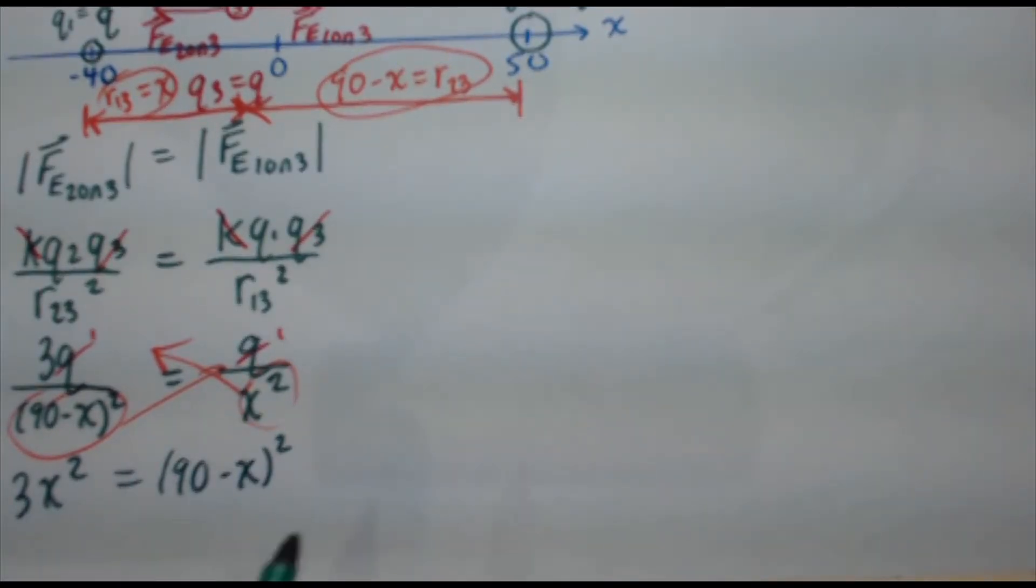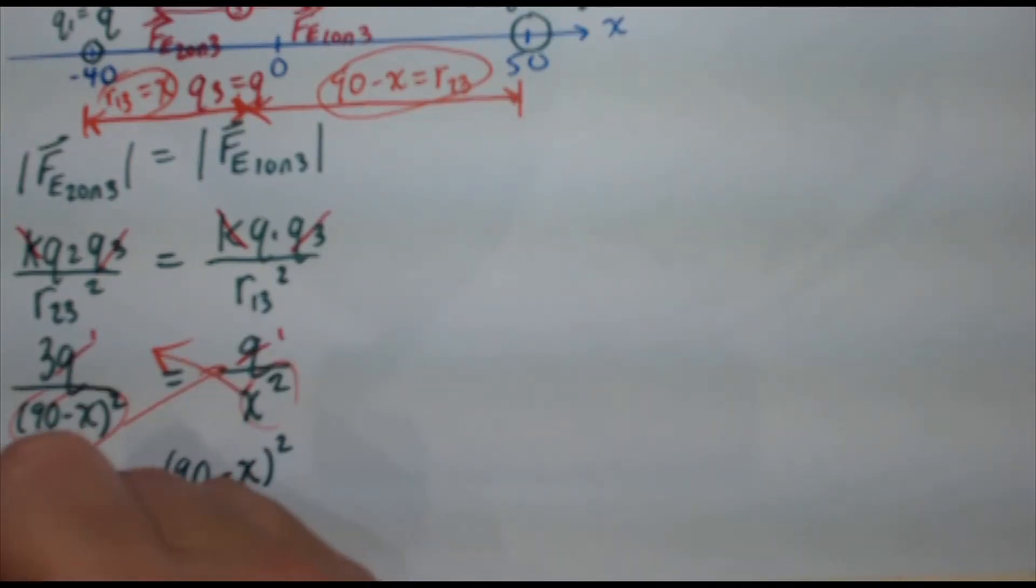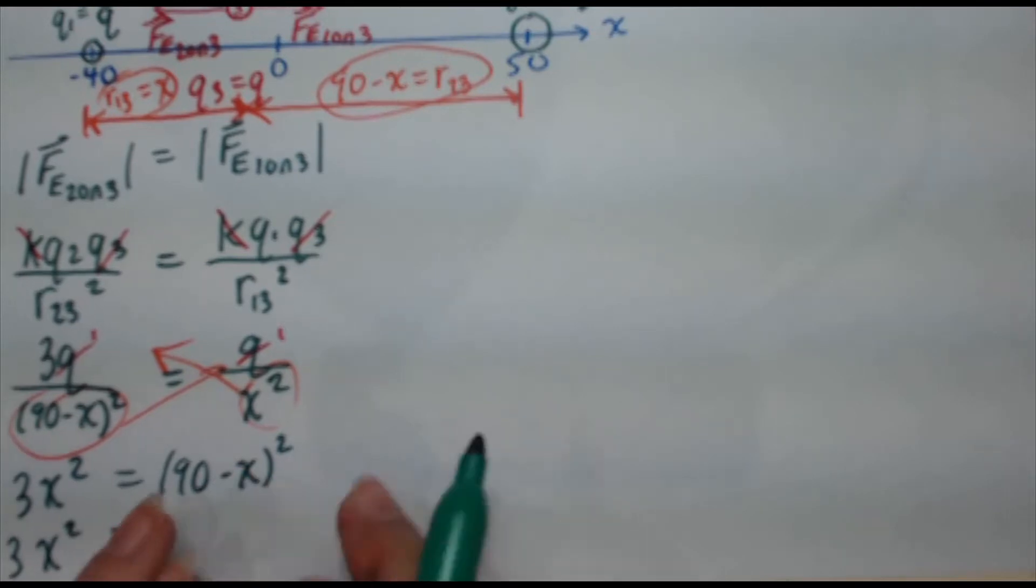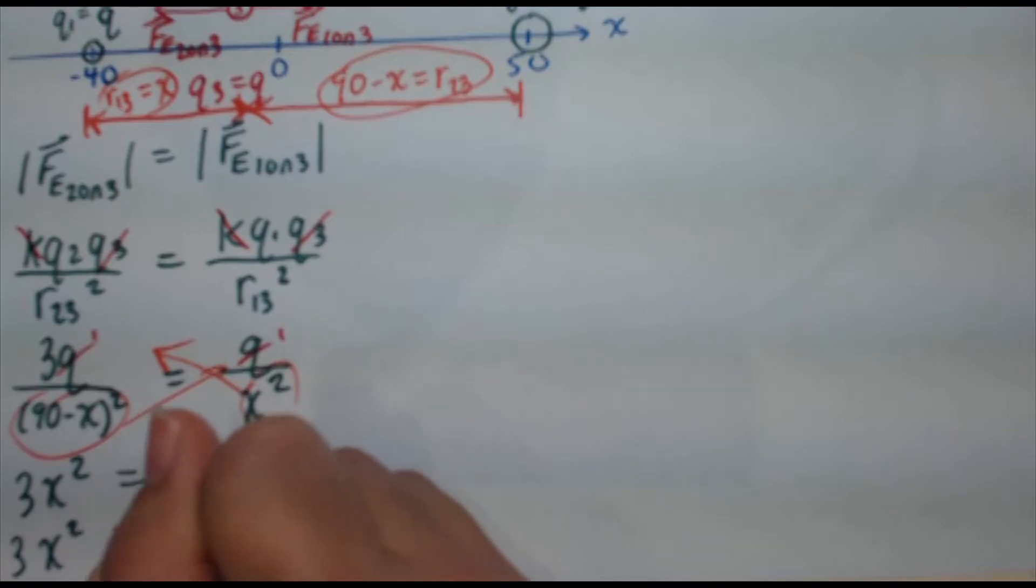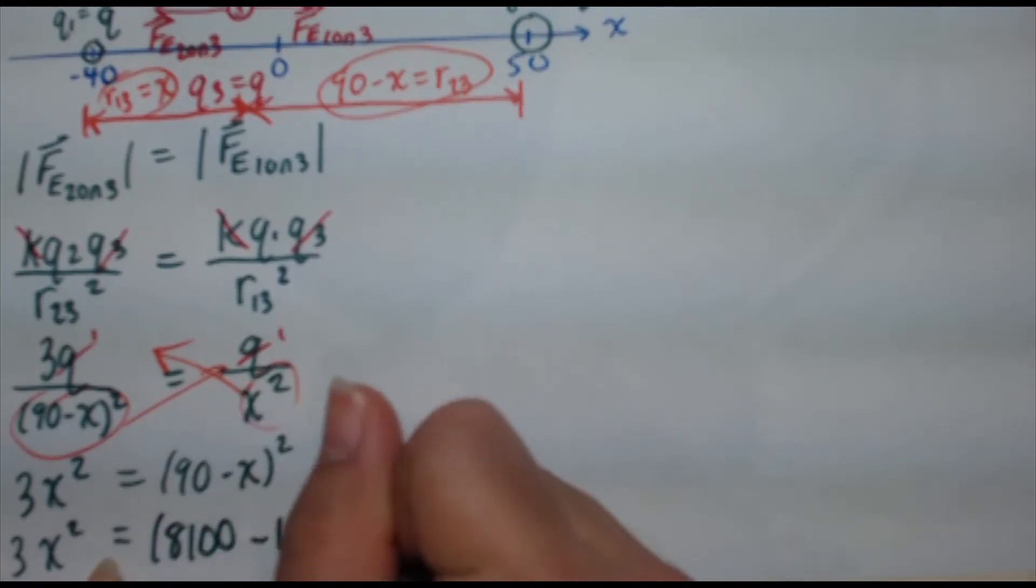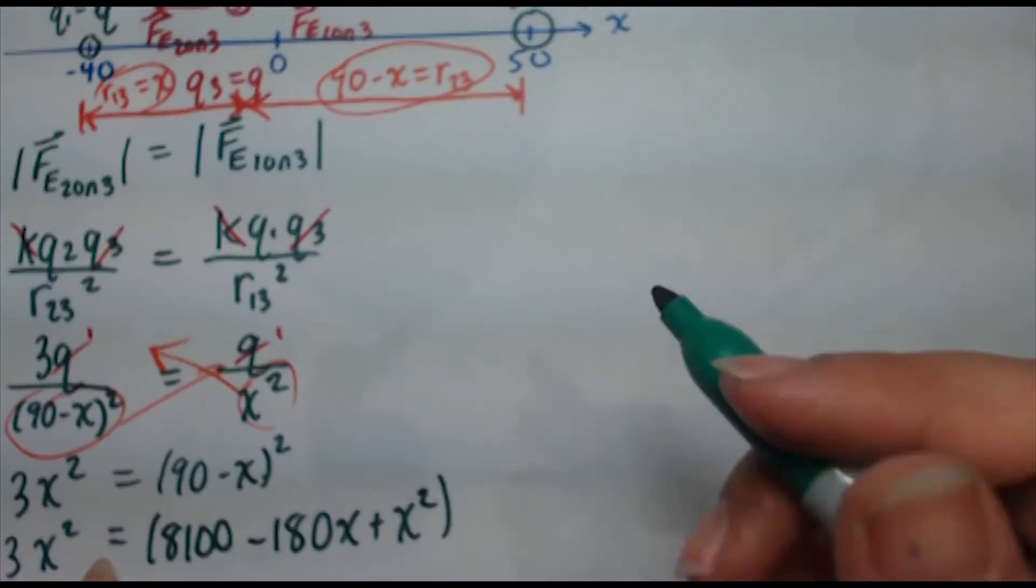So now let's expand the 90 minus x squared. So we still have 3x squared on this side, 90 minus x squared, it's 90 minus x times 90 minus x. So you do your 90 times 90, which is 8,100. 90 times negative x, which is negative 90x minus another 90x is minus 180x. And negative x times negative x is positive x squared.